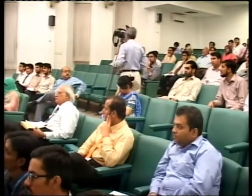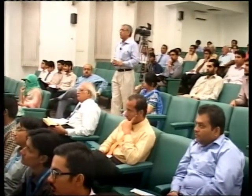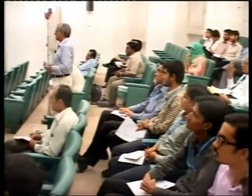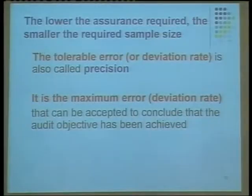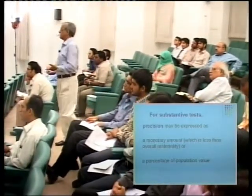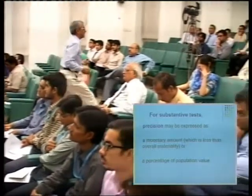The lower the assurance required, the smaller the required sample size. The tolerable error, which we also call performance materiality because it relates to each assertion, is also called the deviation rate. It is the maximum rate that can be accepted to conclude that the audit objective has been achieved. This is in respect of control procedures. For substantive tests, precision may be expressed as a monetary amount which is less than overall materiality, for example as a percentage of population.